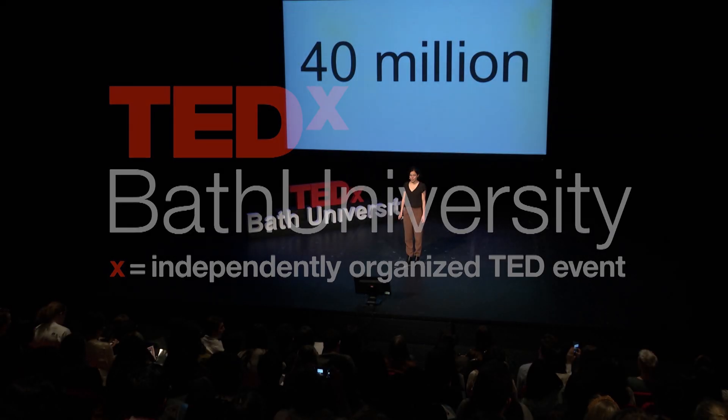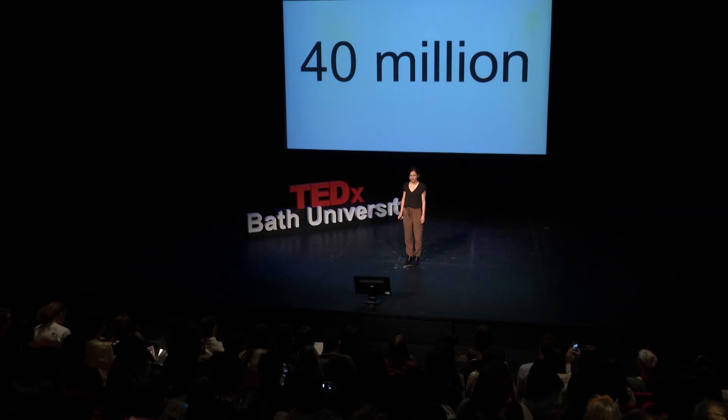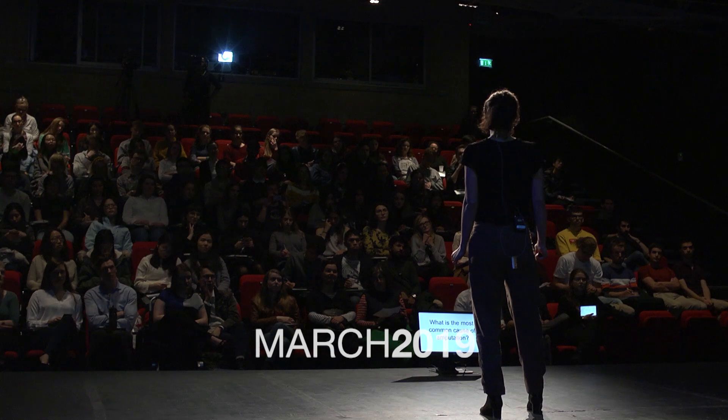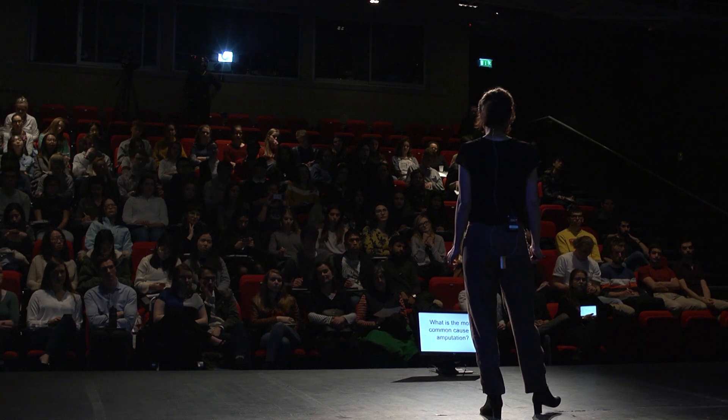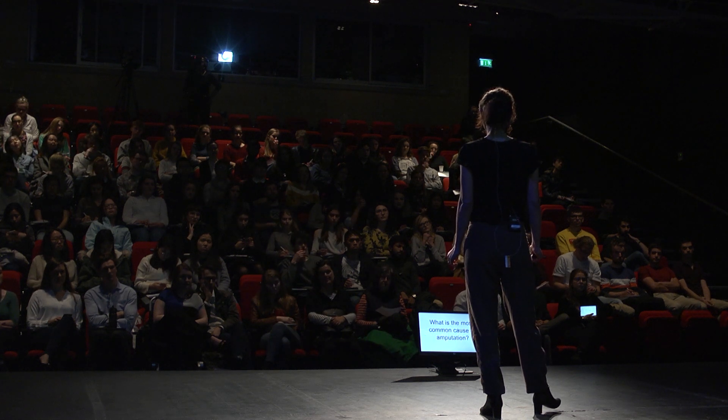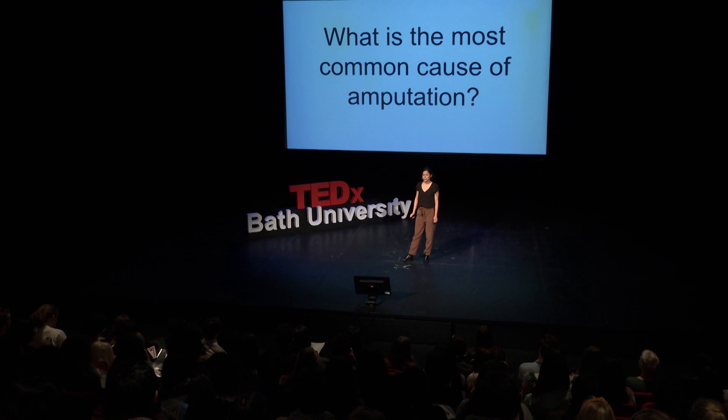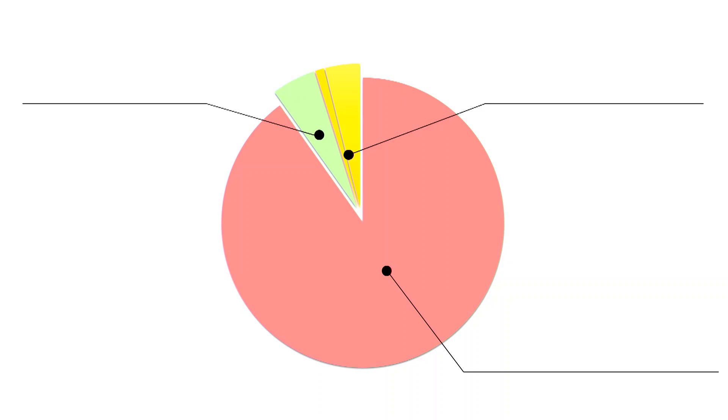There are 40 million amputees in the world. I would like to ask you a question: what do you think is the most common cause of amputation? I have prepared a pie chart to describe the main causes of amputation.